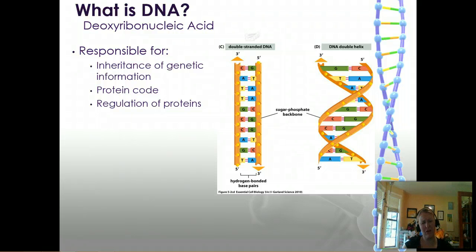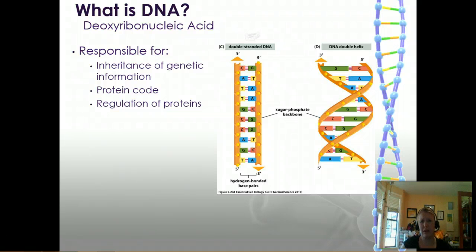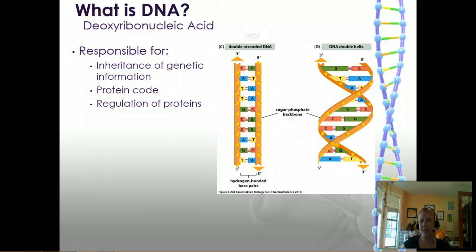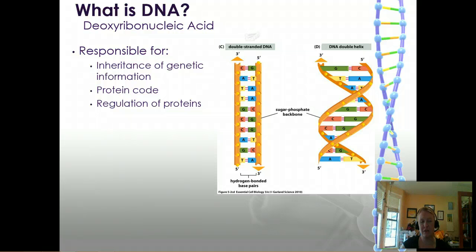Beyond protein coding, there's also a lot of regulation that goes into the DNA code. It tells us when, where, and how much protein we should be making and how things should be activated. This is what leads to cellular differentiation, which we'll talk about later in this unit.